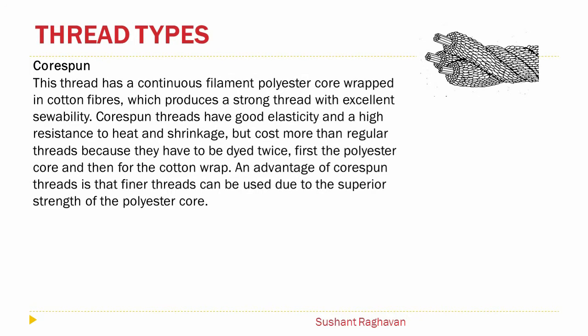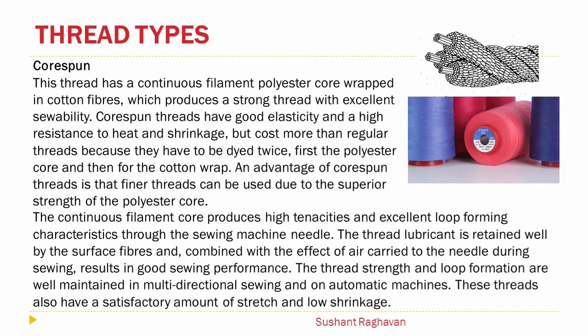Thread types — core spun. This thread has a continuous filament polyester core wrapped in cotton fibers, which produces a strong thread with excellent sewability. Core spun threads have good elasticity and high resistance to heat and shrinkage, but cost more than regular threads because they have to be dyed twice — once for the polyester core and once for the cotton wrap. The advantage of core spun thread is that finer threads can be used due to the superior strength of the polyester core. The continuous filament core produces high tenacity and excellent loop formation characteristics through the sewing machine needle. The thread lubricant is retained well by the surface fibers and, combined with air carried to the needle during sewing, results in good sewing performance. Thread strength and loop formation are well maintained in multi-directional sewing and on automatic machines, and these threads also have a satisfactory amount of stretch and low shrinkage.